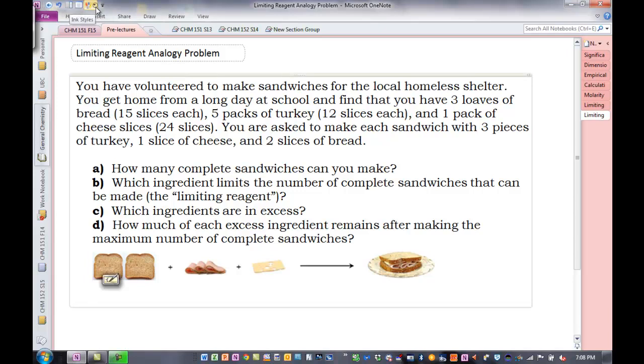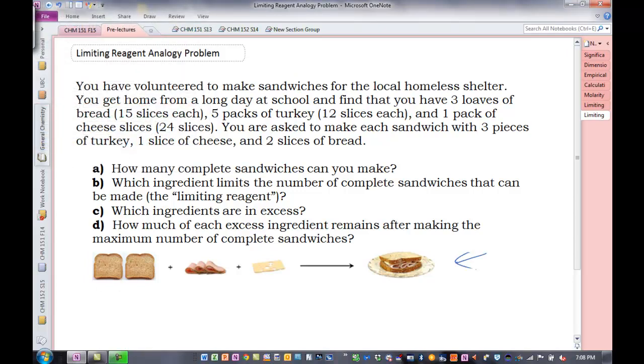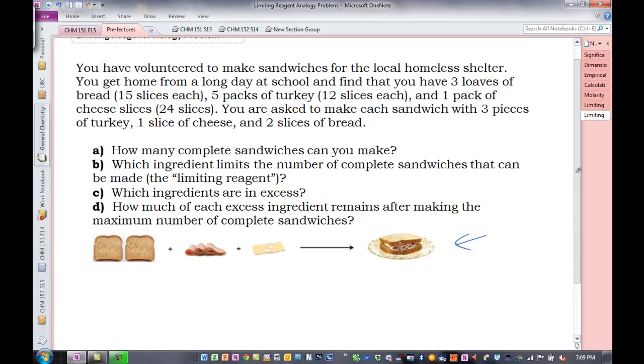So here is a picture to help guide us: 2 slices of bread, 3 slices of turkey, 1 slice of cheese. So this is really a limiting reagent problem, right? Most likely one of our ingredients is going to run out first, unless somehow the manufacturer of the bread got together with the deli and the maker of the cheese and they made sure the packages all worked out right. Not likely, right? This is really a limiting reagent problem.